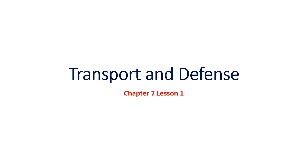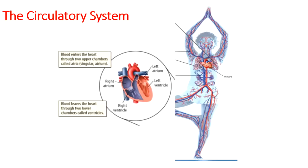Today we are going to take part two of lesson one of chapter seven: transport and defense. We were talking about systems when we moved to the circulatory system. The heart, blood, and blood vessels make up the circulatory system. The circulatory system transports nutrients, gases, wastes, and other substances through the body.